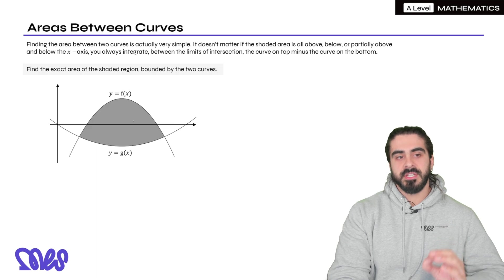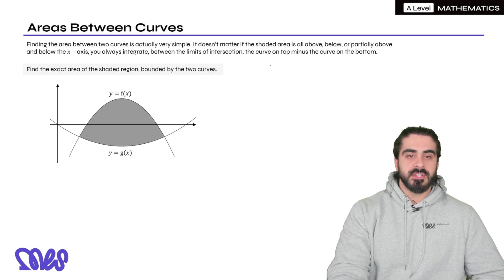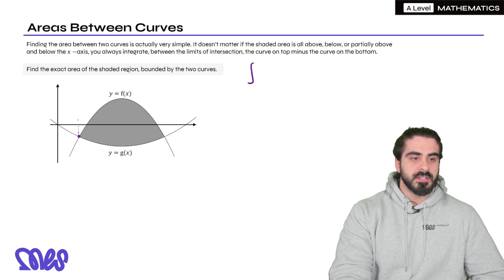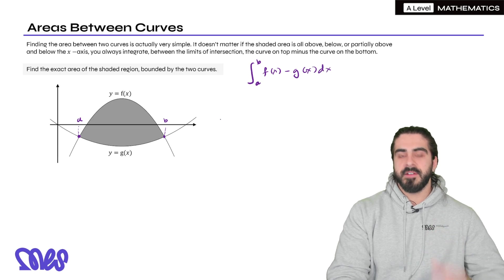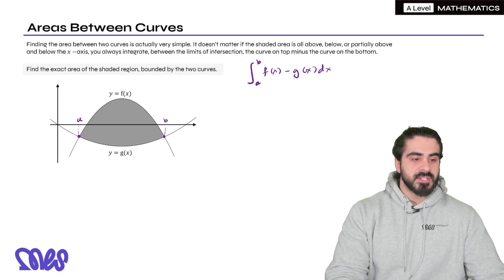So what I'm saying you need to do is you need to integrate between the two points of intersection, let's call it a and b. So between a and b, of the curve on top f(x) minus the curve on the bottom which is g(x) dx.